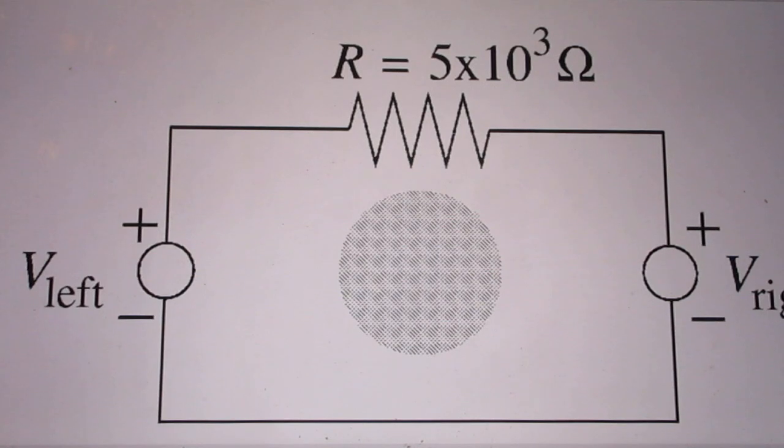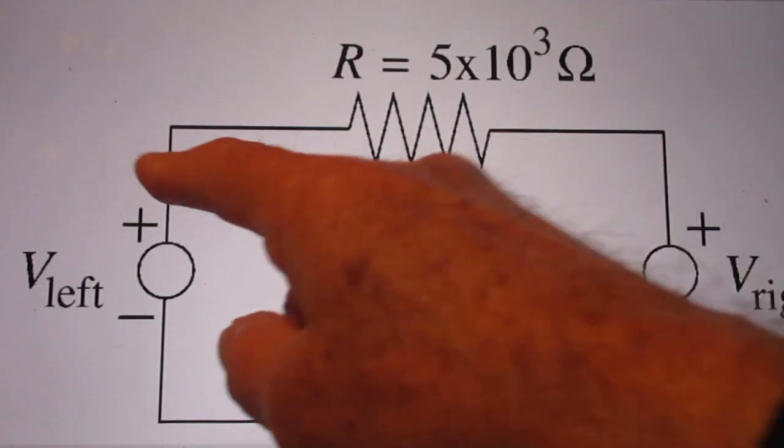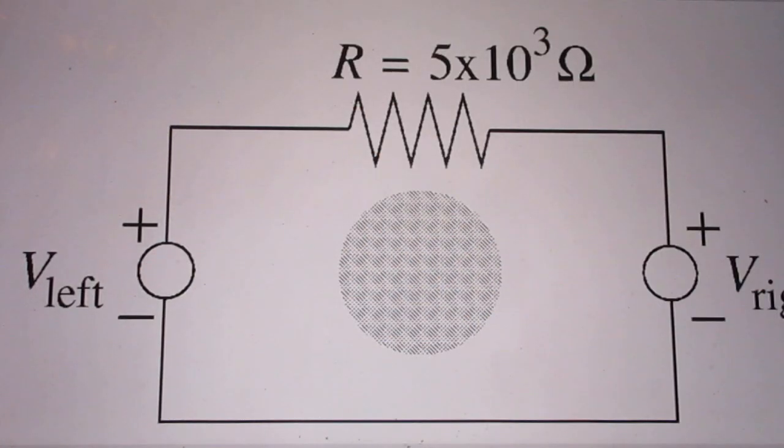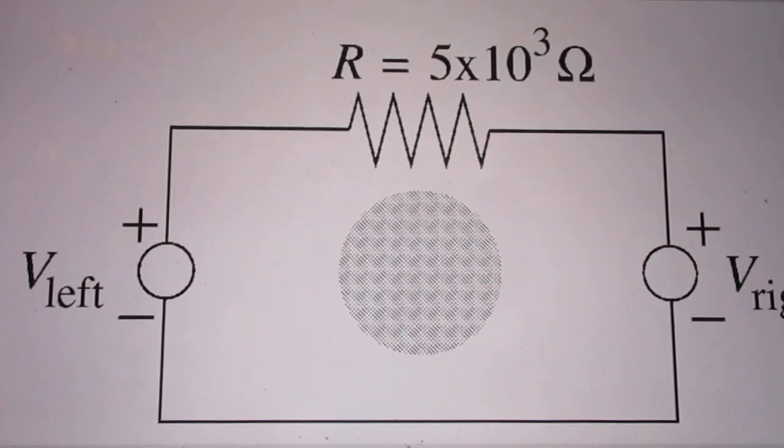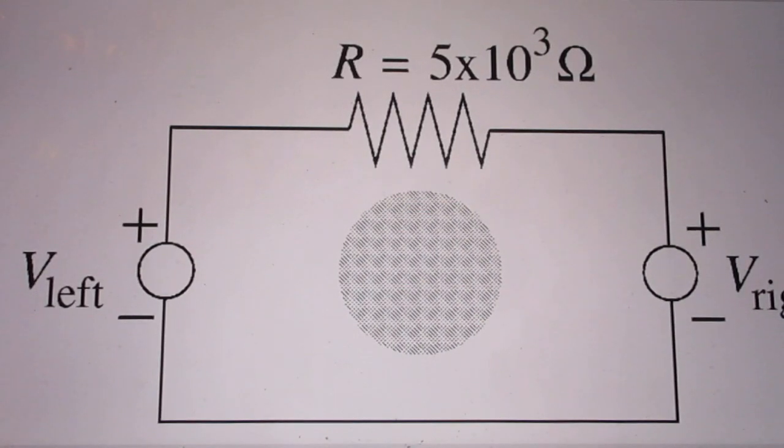If Kirchhoff loop rule would hold and you would add the voltages all the way around, you would have to get 0, but you don't. All right. So for those of you who applied somehow KVL, that's only embarrassing.